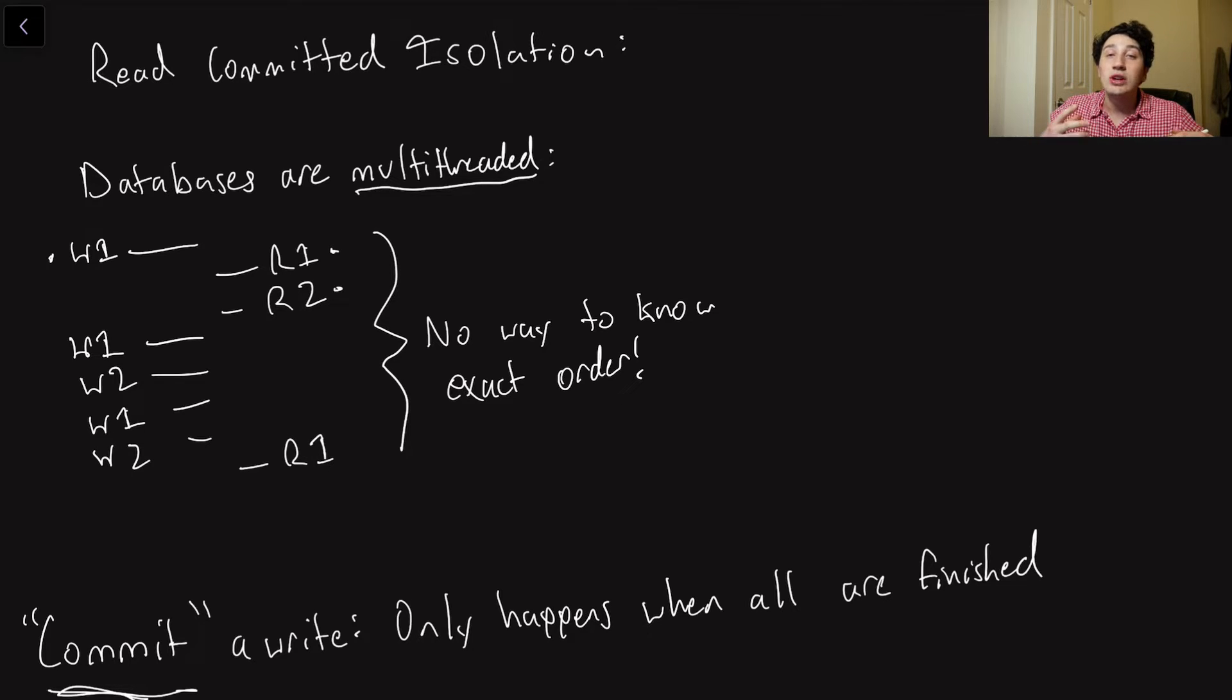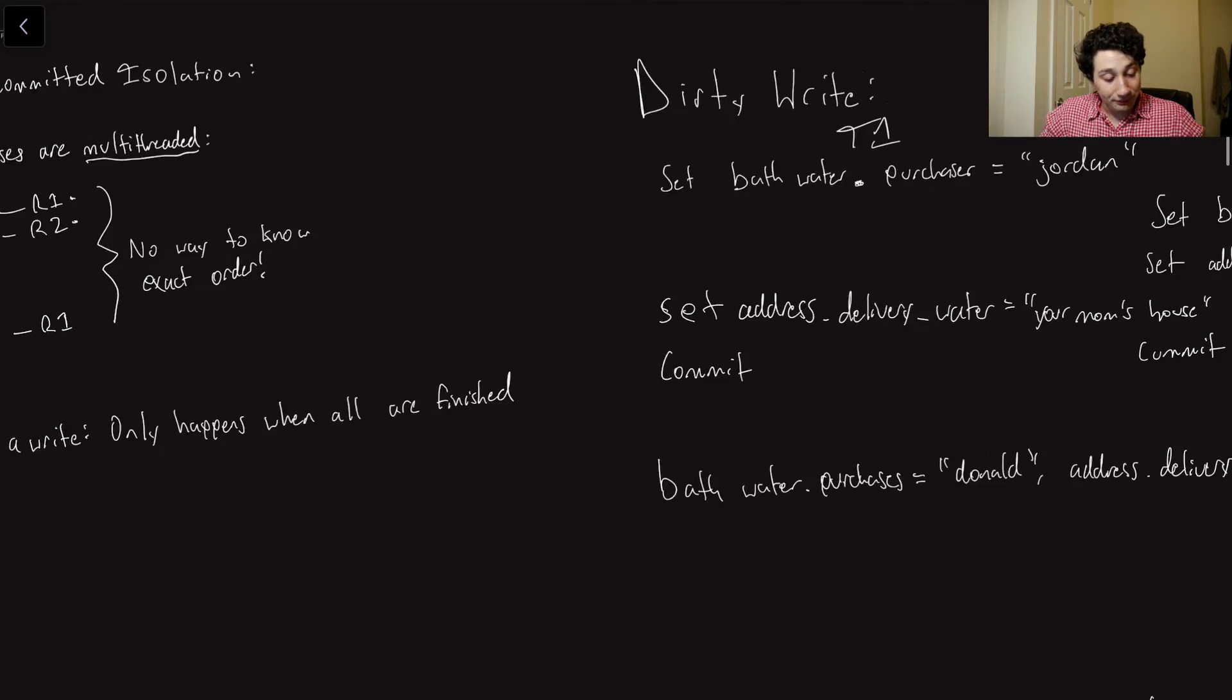So if I've written in the first row, but I haven't yet written in the second, we know that that first write is not yet committed. So they have to all be finished.